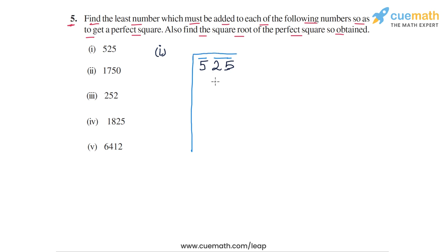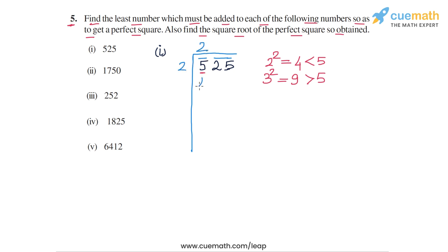In the first step, we find the largest possible digit whose square is less than or equal to 5 under the first bar. That digit is 2, because 2² = 4, which is less than 5. But the next digit 3 has a square of 9, which is greater than 5. So the first divisor is 2, and the first digit of the quotient is also 2. 2 × 2 = 4. Subtracting, we get 5 − 4 = 1. Bringing down the digits 2 and 5, we get the dividend 125 for the next step.